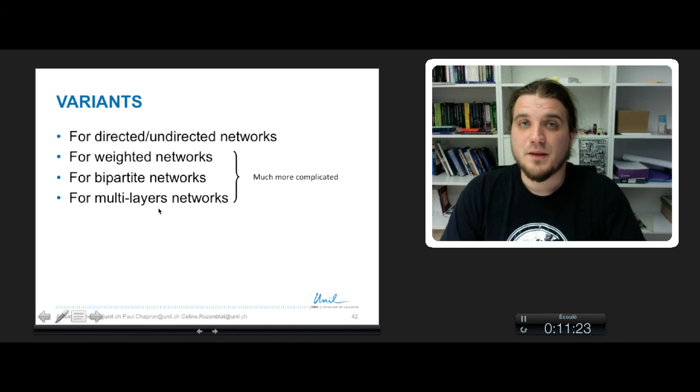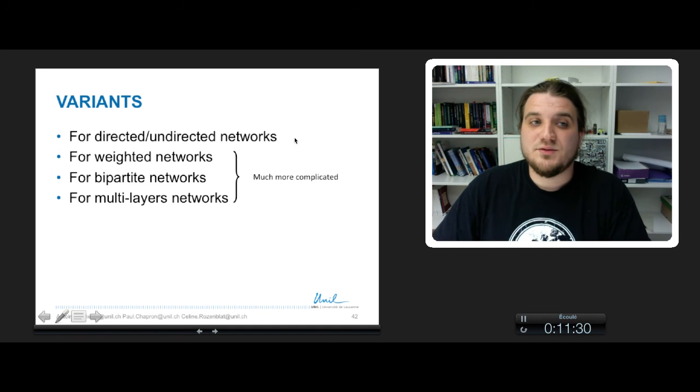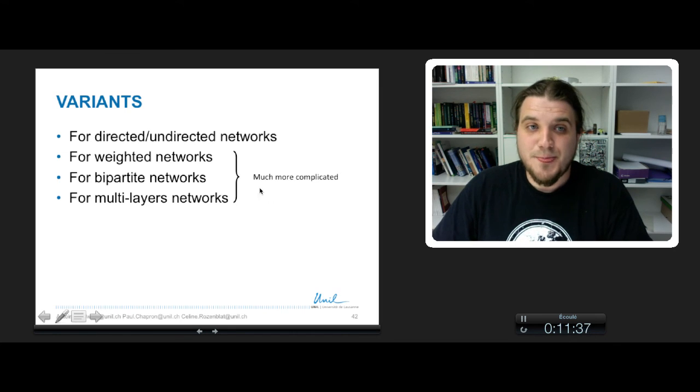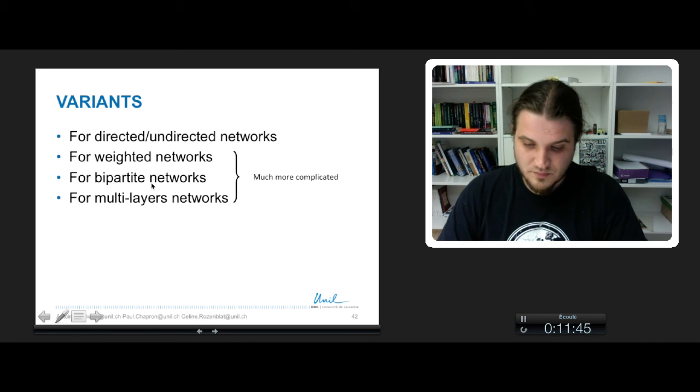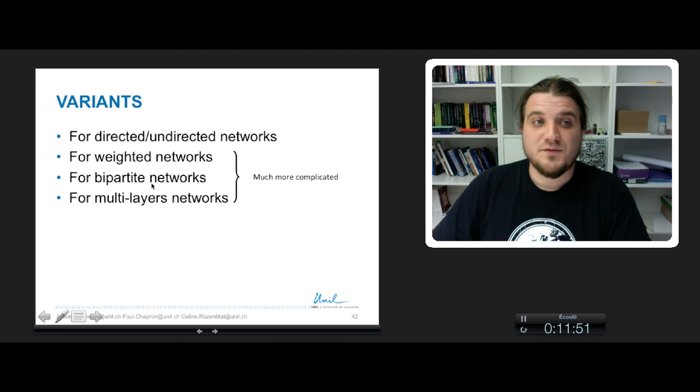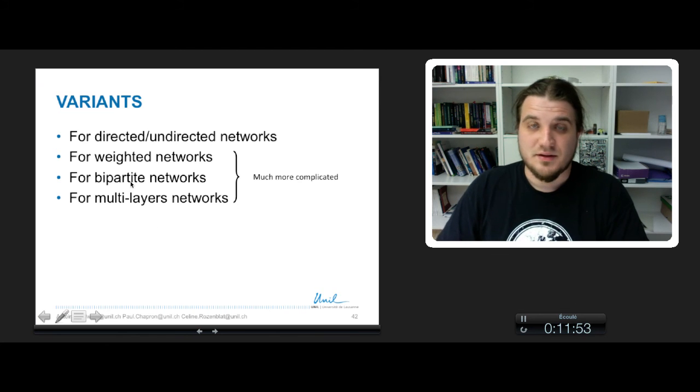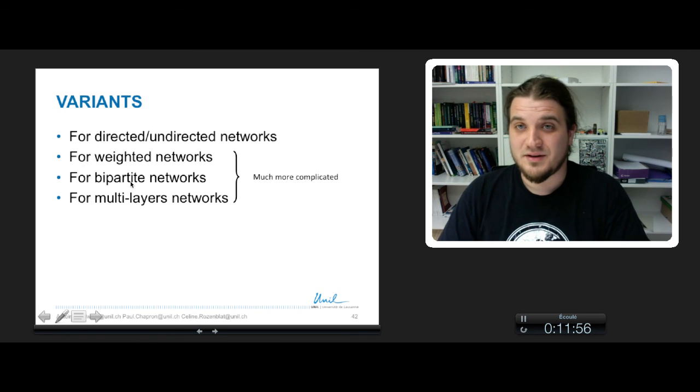For all of the ERGM terms, there are some variants for different kinds of graphs - for directed and undirected networks, weighted, bipartite, and multilayered networks. But for these three kinds of networks, the models are much more complicated to fit because of the research space. The research space is already very huge for just binary networks with 0 and 1 on the edges. But for these kinds of networks, it's several times more huge.